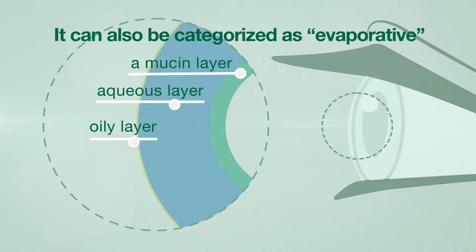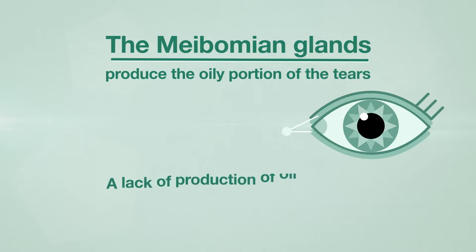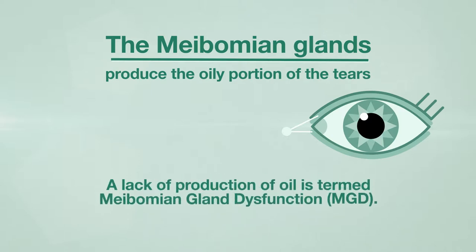Evaporative dry eye is caused by a lack of oily component production of the tears. The meibomian glands in the eyelids produce the oily portion of the tears. A lack of production of oil is termed meibomian gland dysfunction, or MGD.